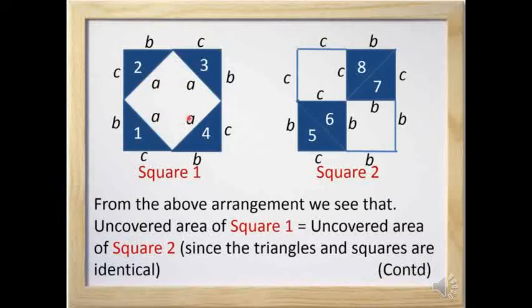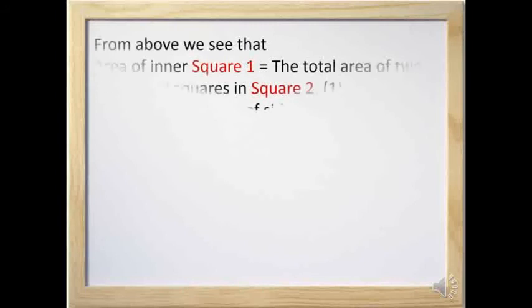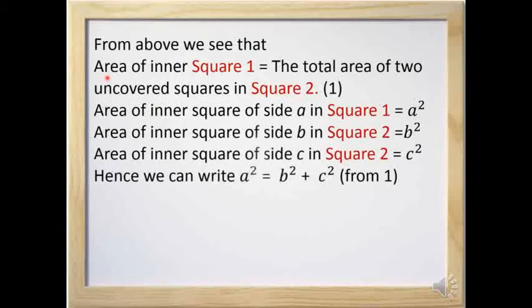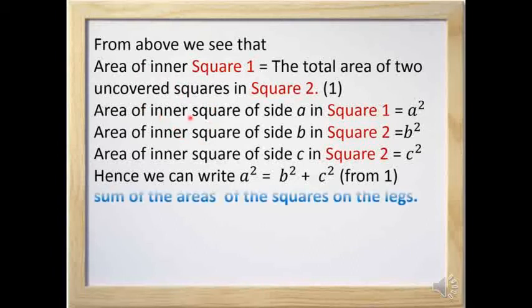The uncovered area in square one is given by the square with side 'a', so the area is a². The uncovered area in square two is given by c² + b². So we can easily find that a² = b² + c².